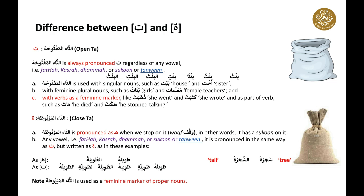Ta maftuha is used with singular nouns such as bait meaning 'house' and ukht meaning 'sister.' Ta maftuha is also used with feminine plural nouns such as banat meaning 'girls' and muallimat meaning 'female teachers.' Ta maftuha is also used with verbs as a feminine marker — like zahabat meaning 'she went' and katabat meaning 'she wrote' — and as part of the verb such as mata meaning 'he died' and sakata meaning 'he stopped talking.'